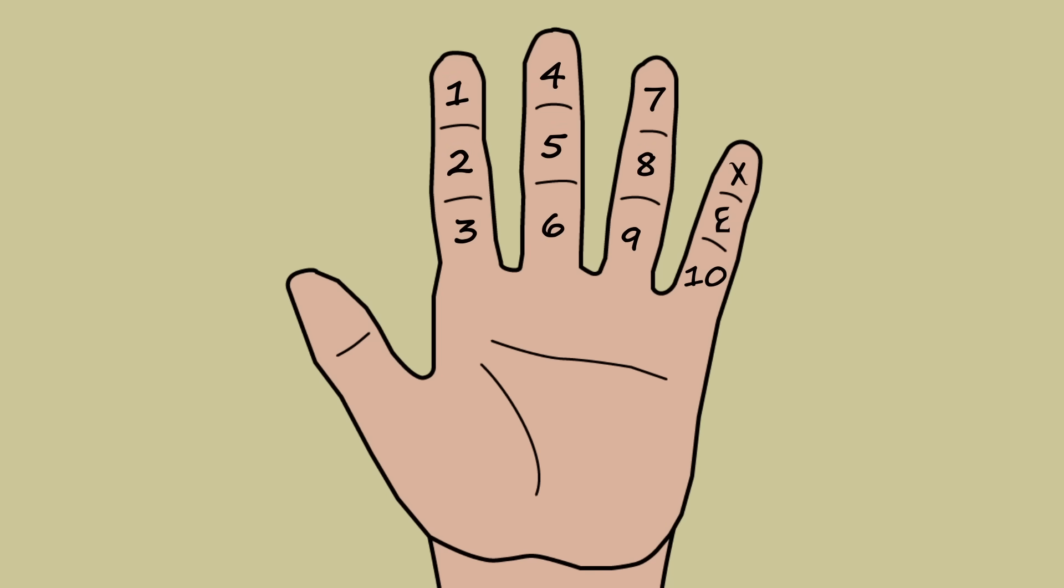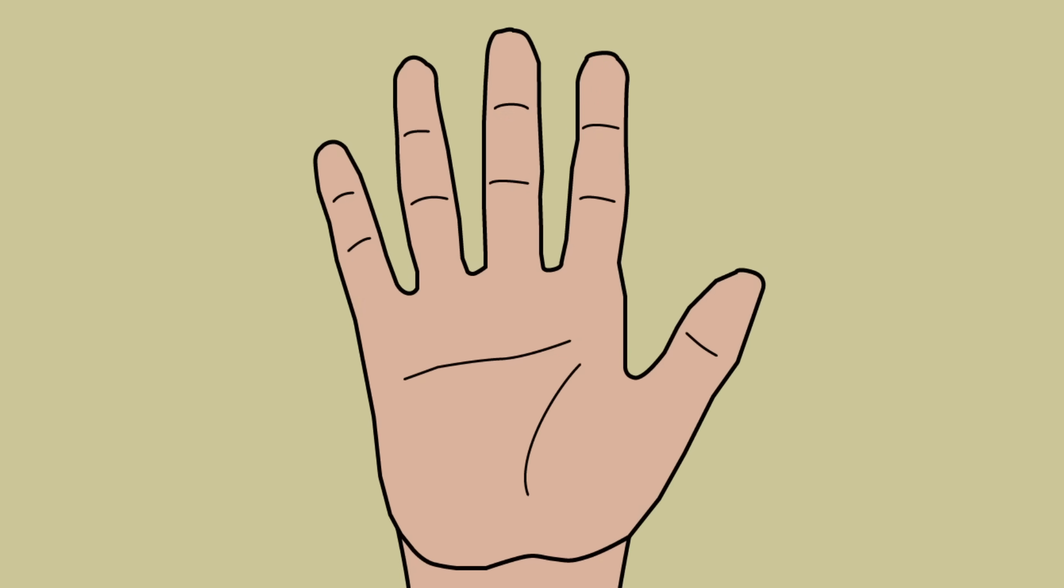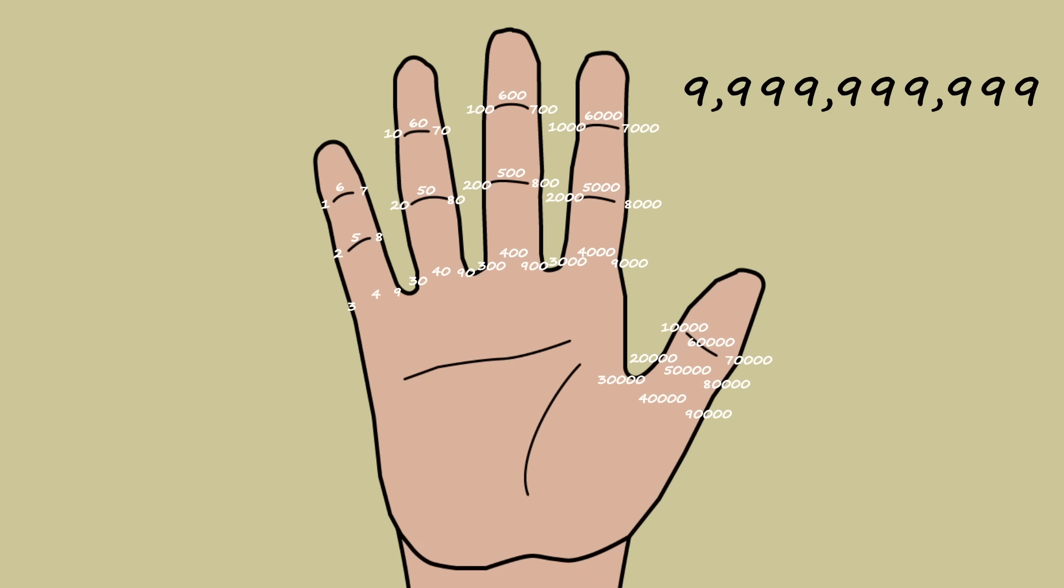In fact, elaborate finger counting systems have existed across the world for thousands of years. A system used in China even allows you to count up to 9,999,999,999, with each finger having 9 imaginary points, 3 on each crease line.